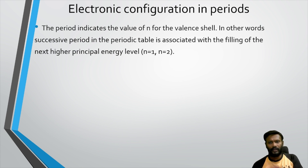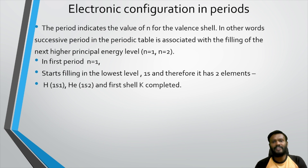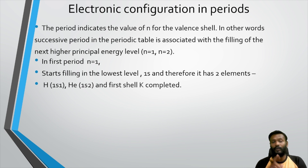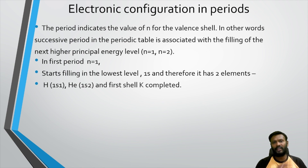N equal to 1 is the first shell, n equal to 2 is the second, n equal to 3 is the third. In the first period, n is equal to 1. It starts filling in the lowest energy level — the 1s orbital. The 1s orbital can accommodate two electrons, which is why hydrogen and helium — two elements — complete the first period.